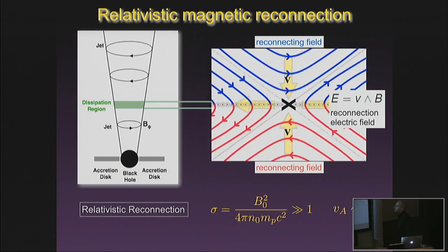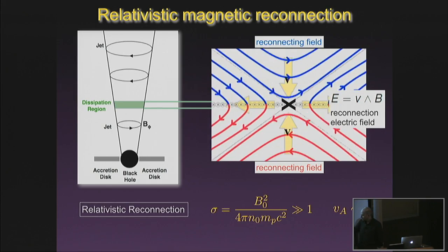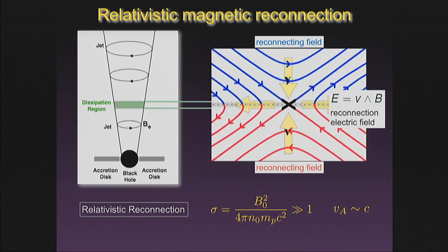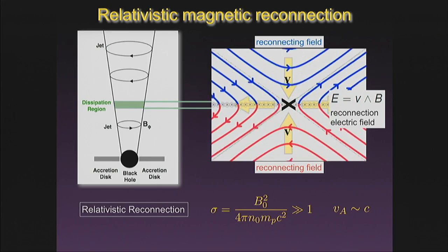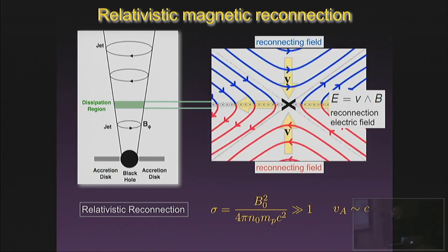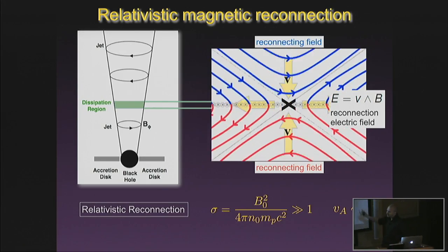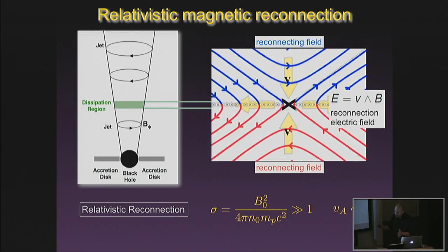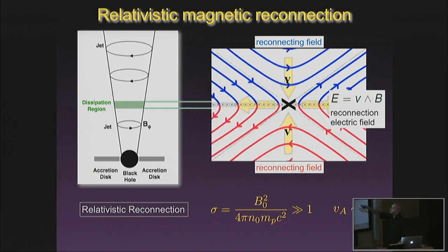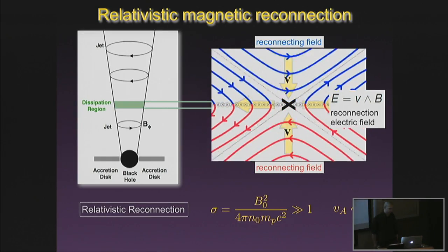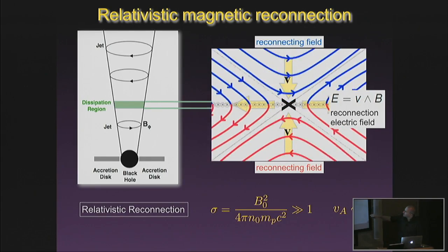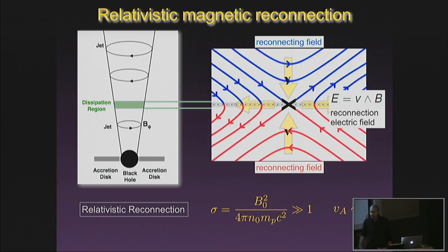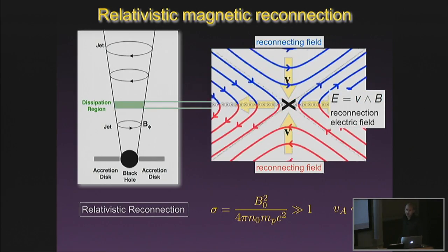We'll argue that relativistic reconnection can explain all of this. We need to envision jets as a sequence of magnetic field loops with a region in between where the polarity of the magnetic field switches. In reconnection, magnetic field lines converge into a central region, and the currents provided by the particles are not sufficient to provide the curl of the magnetic field there, so the field lines break and move to the side. This is reconnection 101. The regime we're interested in is where magnetic energy dominates over the rest mass energy of the plasma — we think this is happening in blazar jets.